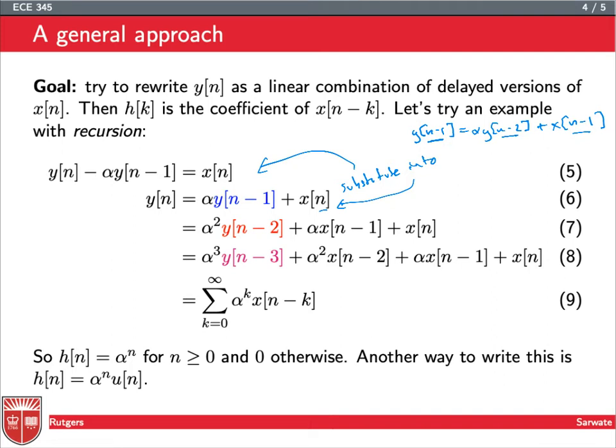I'm looking at alpha times y[n-1], so this is going to be alpha squared here and plus an alpha there. So I get alpha squared y[n-2] plus alpha x[n-1] plus x[n]. Then I can repeat the process again. y[n-2] equals alpha y[n-3] plus x[n-2]. We plug that in here, and we get alpha cubed y[n-3] plus alpha squared x[n-2] plus alpha x[n-1] plus x[n].